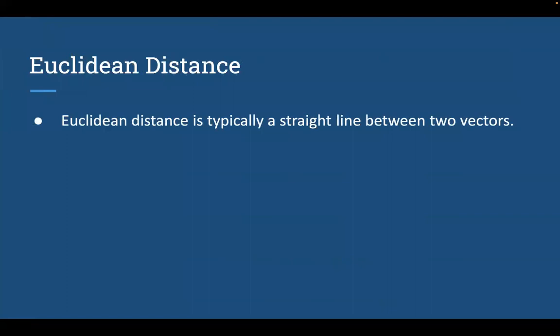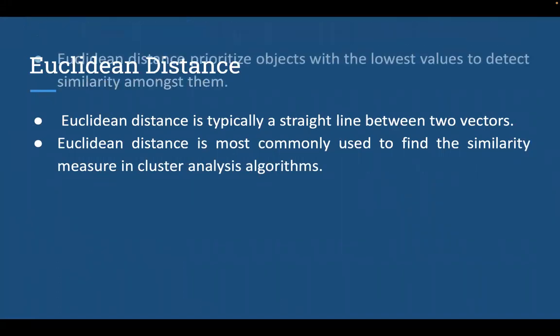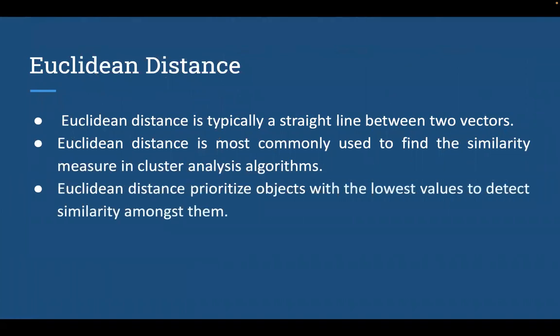Euclidean distance is nothing but a straight line distance between two vectors. It is used to measure similarities between two sets of data. For similar sets of data, the Euclidean distance calculated will be closer to zero, and if they are different, distance will be higher than zero. Since Euclidean distance is a distance-based metric, it gives priority to objects with the lowest values to observe similarities between them.